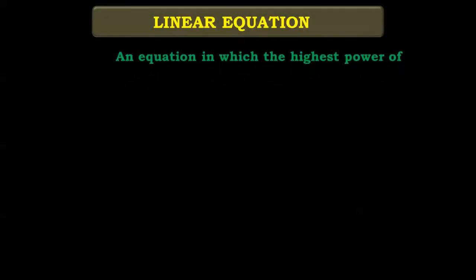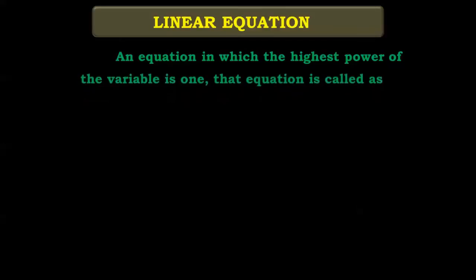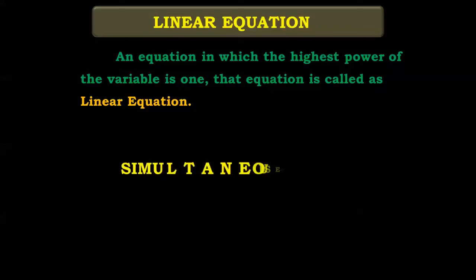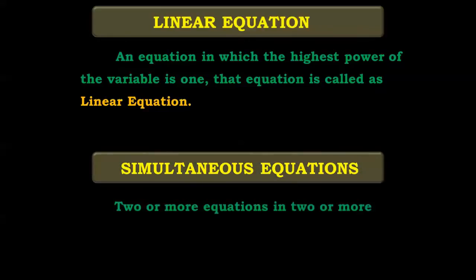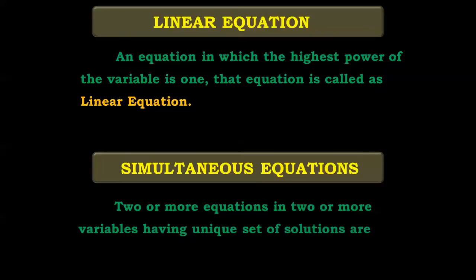A linear equation is an equation in which the highest power of the variable is one. When two or more equations in two or more variables have a unique set of solutions, they are called simultaneous equations. In simultaneous equations, you consider two or more equations containing two or more variables, but they have a unique set of solutions.